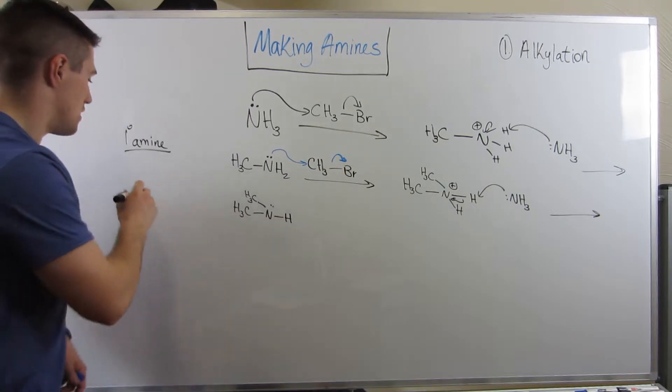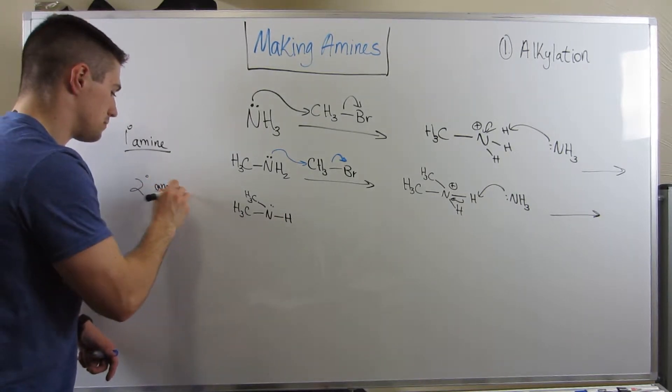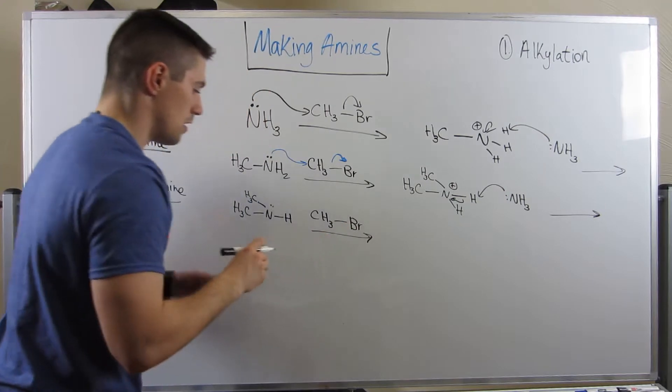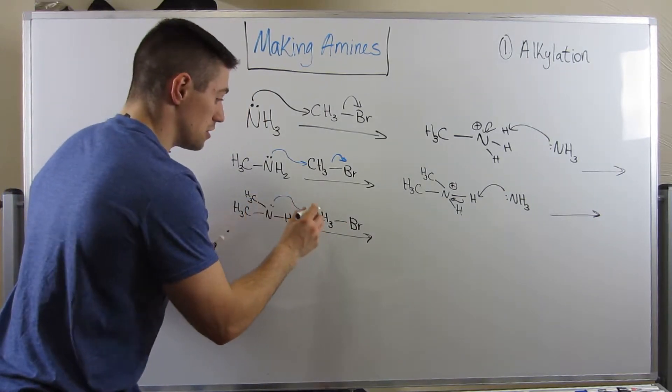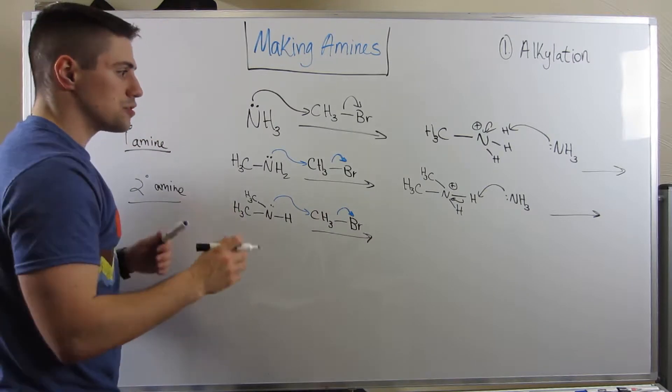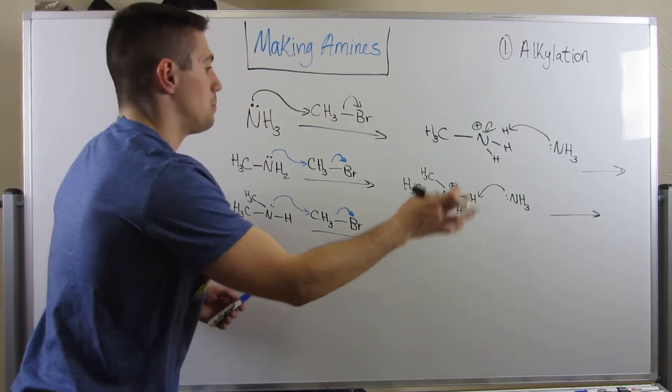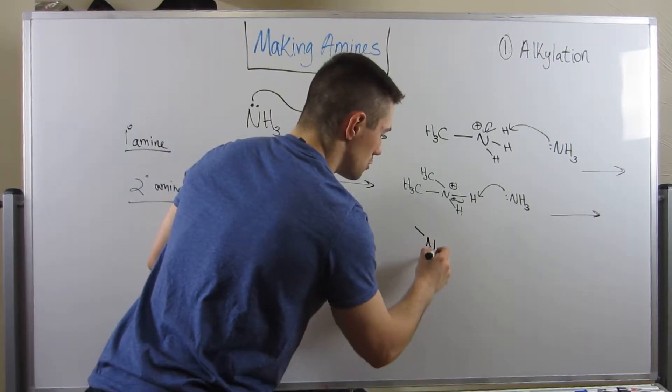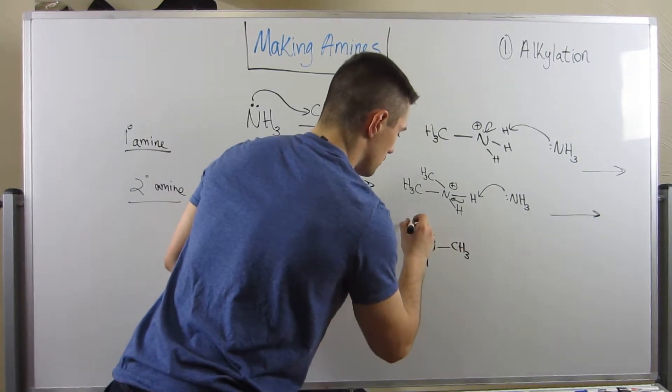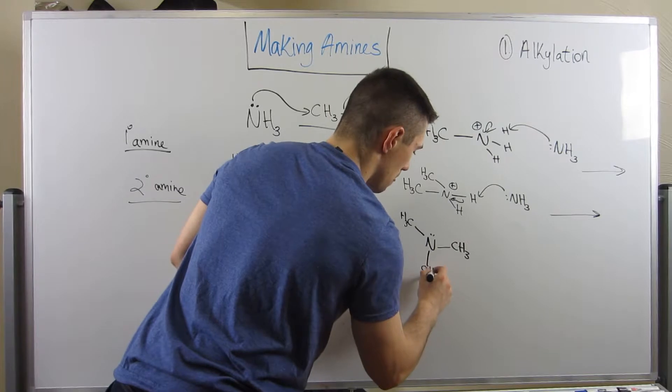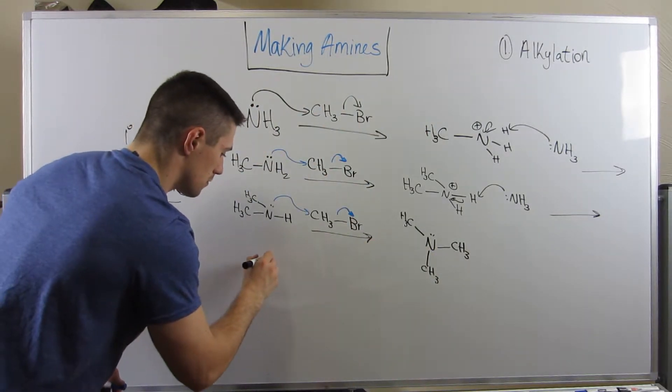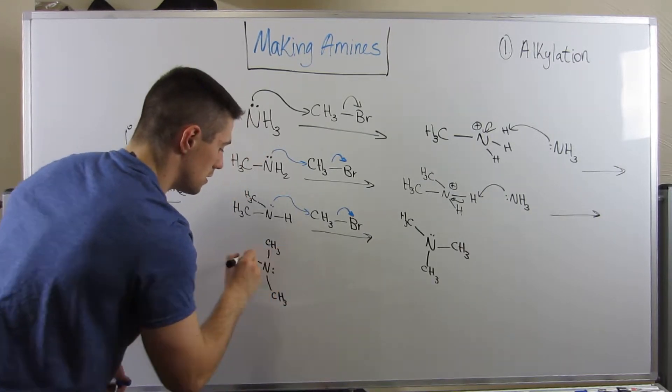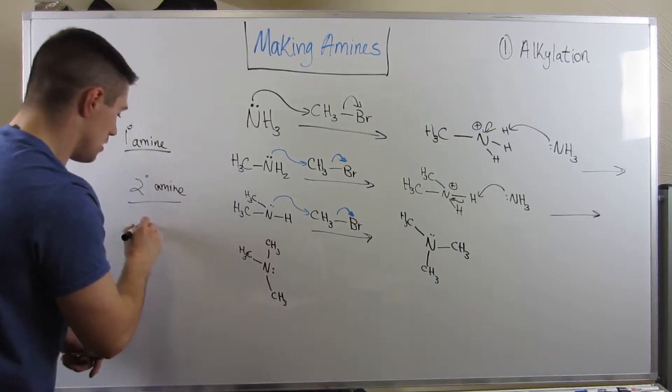Again, something is going to pick up one of these hydrogens to eliminate that positive charge on nitrogen. Nitrogen is electronegative, he does not like positive charge. Let's use another ammonia. This ammonia is going to grab H, dump electrons on nitrogen. So this is what we have now, this is now a secondary amine. Let's do it again. CH3Br, and we're just going to attack in an SN2 fashion again.